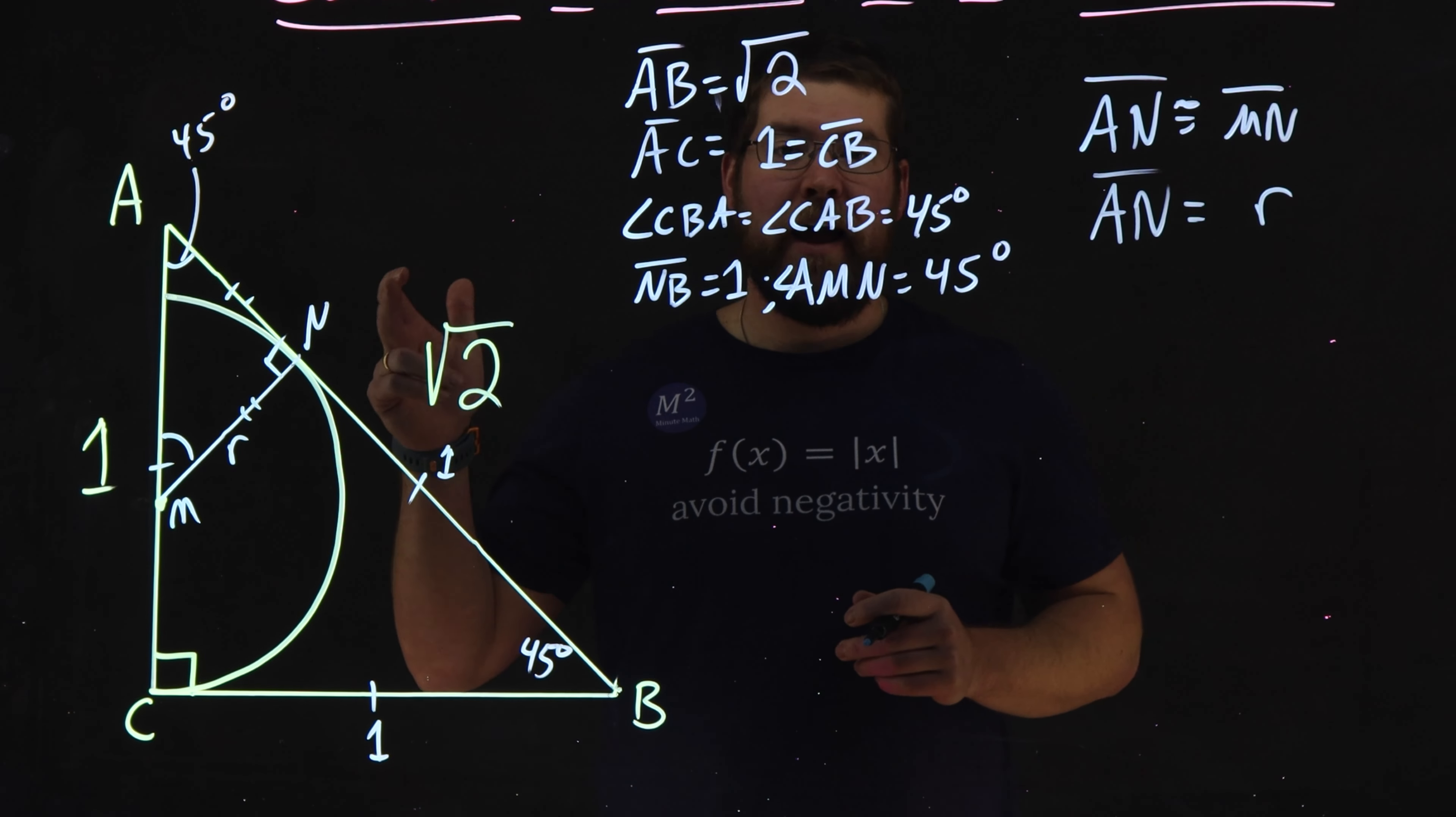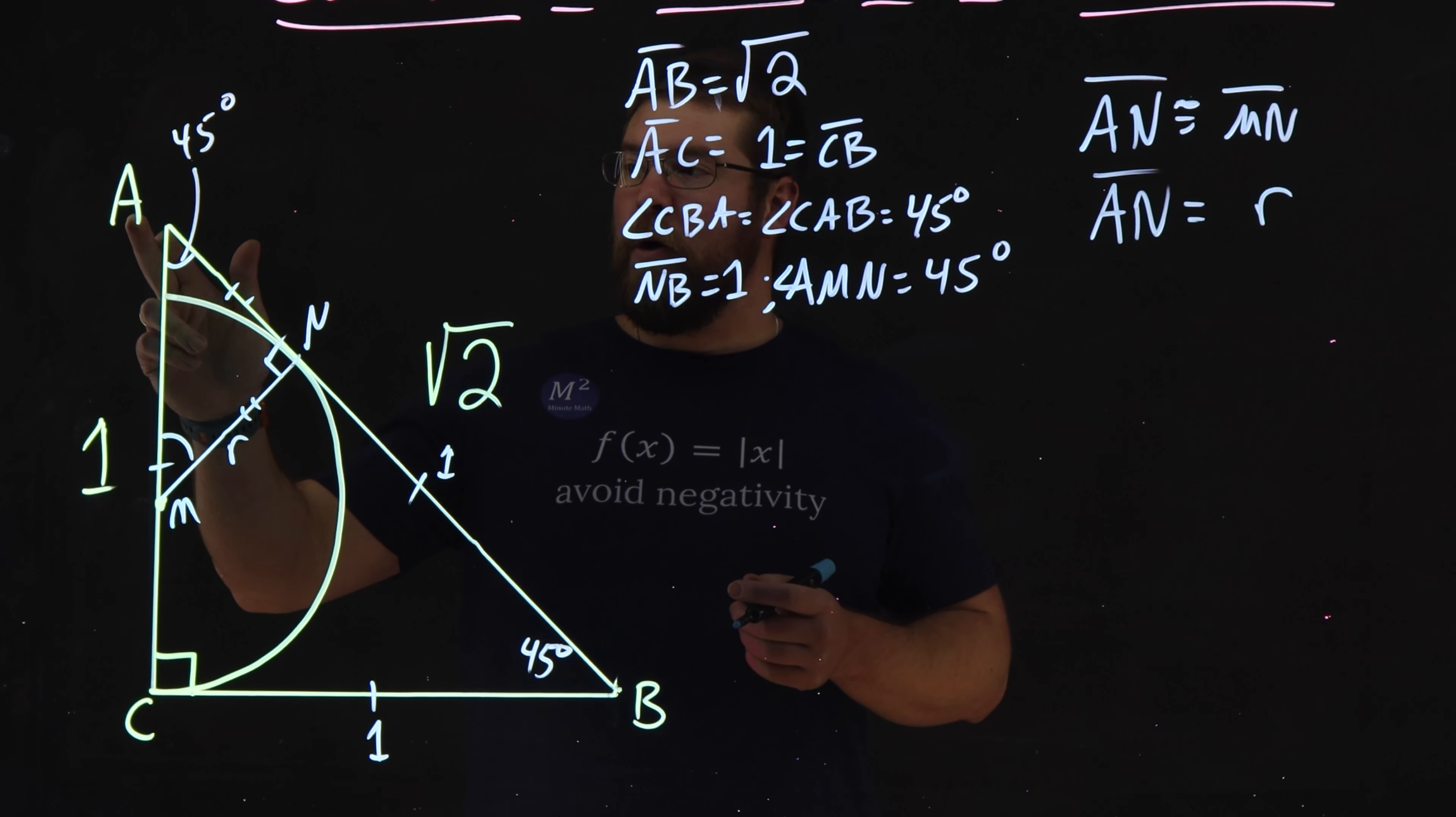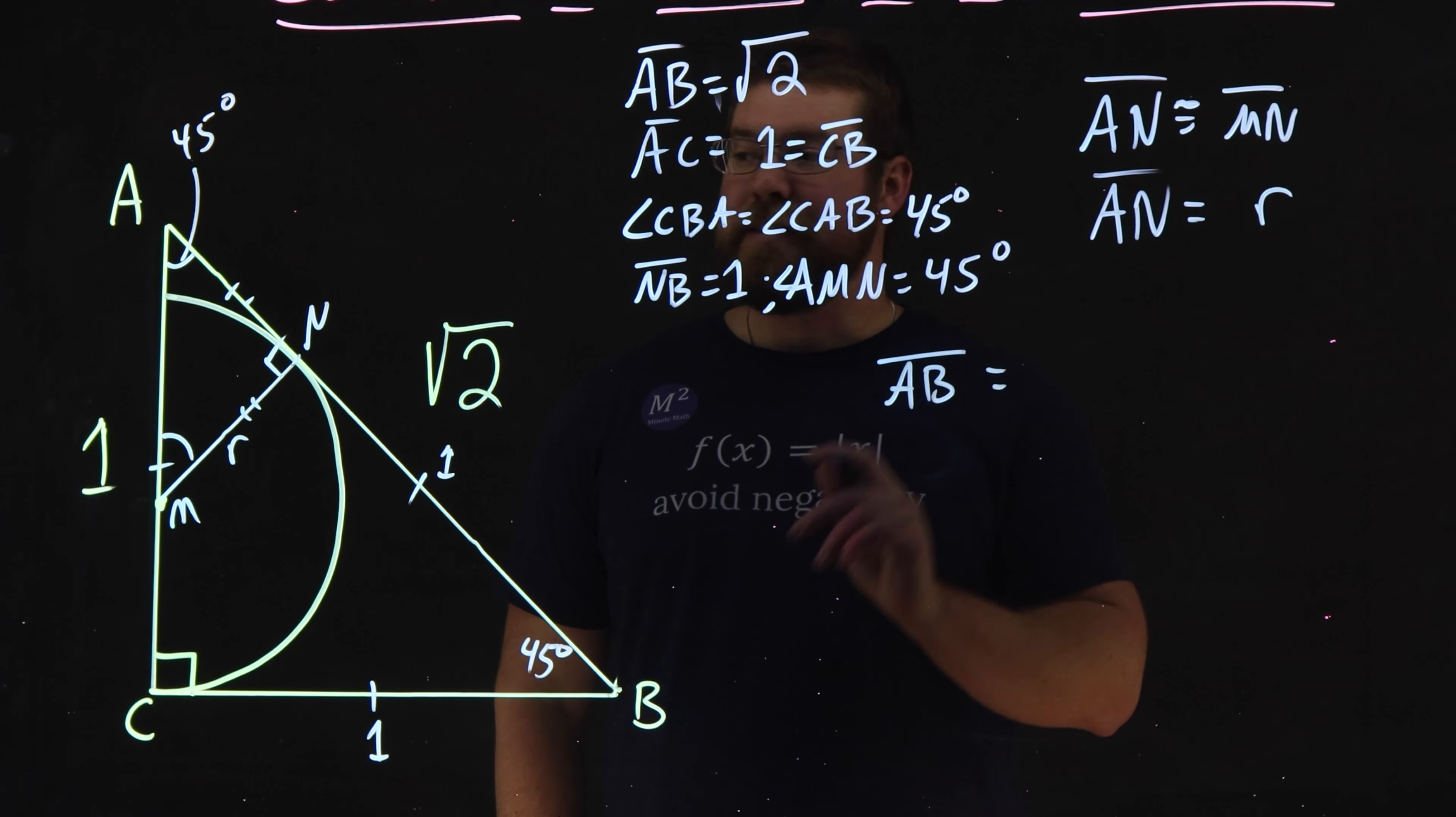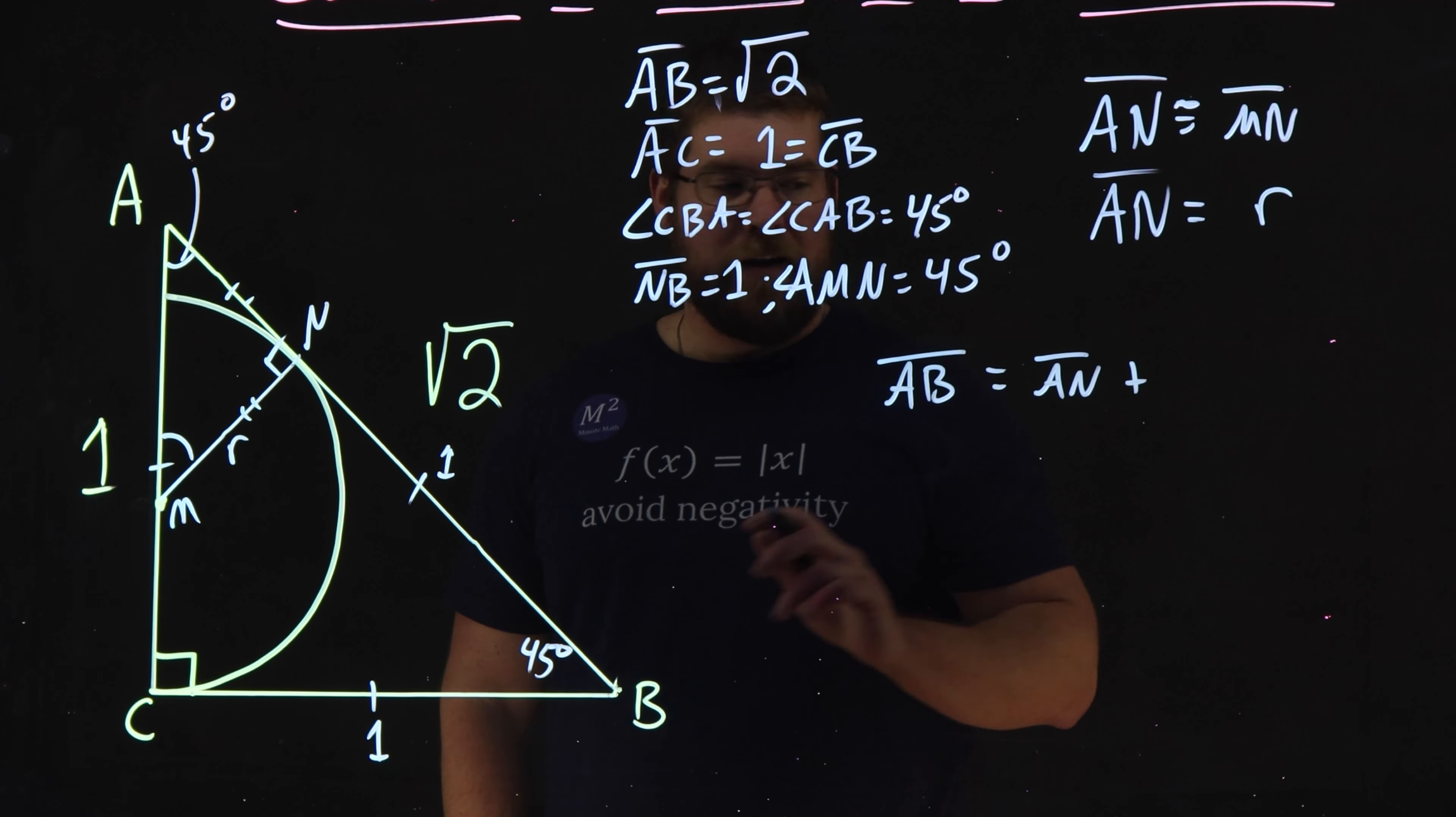If we can find the length of AN, we can find the radius of our semicircle. And this is where it's kind of nice and easy. We know the length of AB. The length of AB is equal to the sum of the parts. So we have AB is equal to the length of AN plus the length of NB.